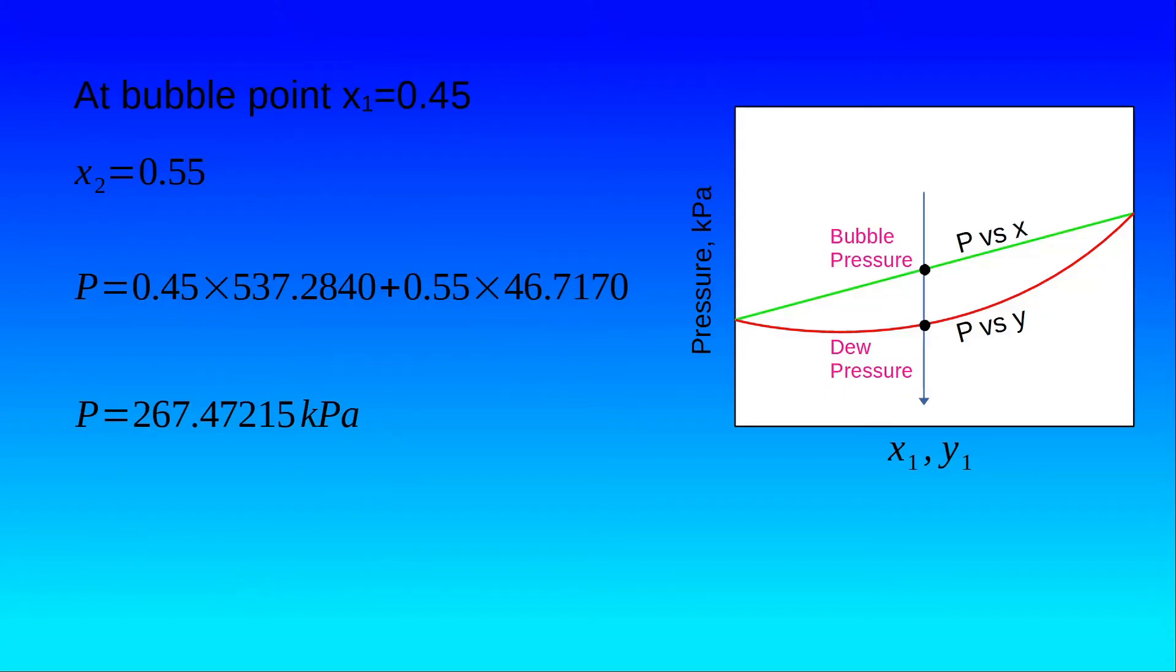Now let's understand the idea of bubble pressure and dew pressure. Let's assume that we have a solution at this point. The concentration of n-heptane here is 0.45 mole fraction. So we take this solution, and here in this area, especially when the pressure is very high, the solution is going to be in liquid phase. Now suddenly what we do is we start reducing the pressure on this solution.